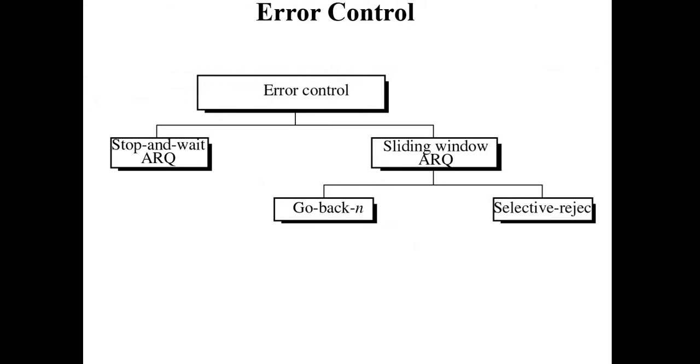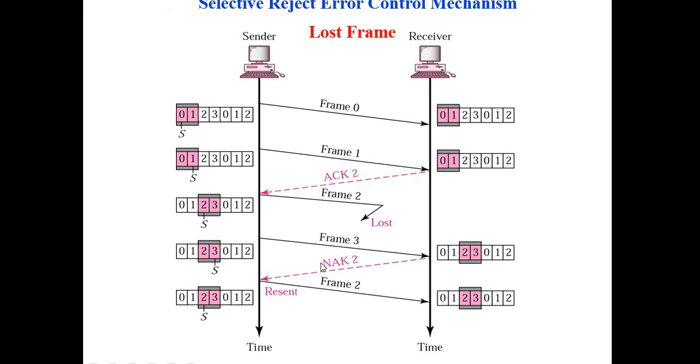Now the error control protocols in Sliding Window ARQ, we have Go Back N and Selective Repeat ARQ. Stop and Wait and Go Back N we have seen earlier.